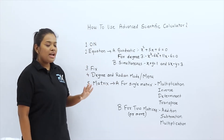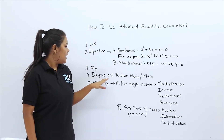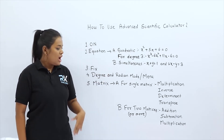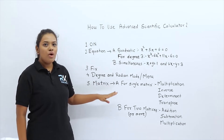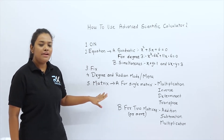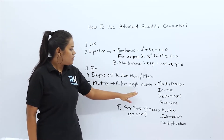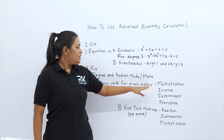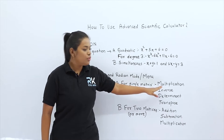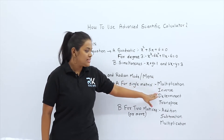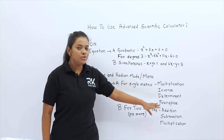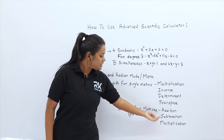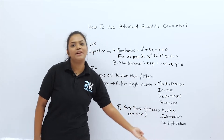Then we learn how to put the calculator in fixed mode, and how to put it in either degree or radian mode. After that we are going to learn how to solve matrices for a single matrix and for two or more matrices. For a single matrix we will learn multiplication, inverse, determinant, and transpose. For two or more matrices we will learn addition, subtraction, and multiplication.